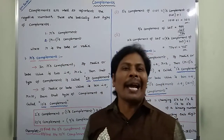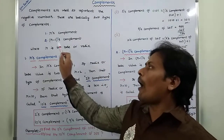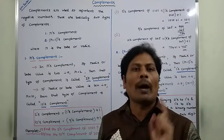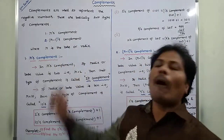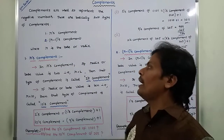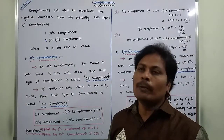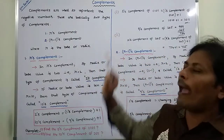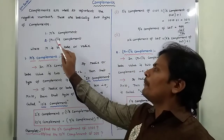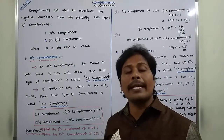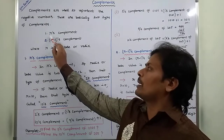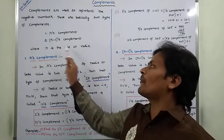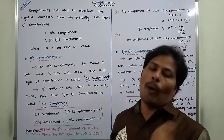Now coming to R-minus-1's Complement. If R value is equal to 2, then R minus 1 equals 1, so that type of complement is called 1's Complement. If Base or Radix value R is equal to 10, then substitute 10 in place of R: 10 minus 1 is 9, so that type of complement is called 9's Complement.